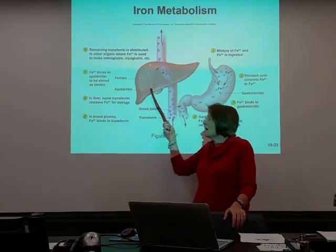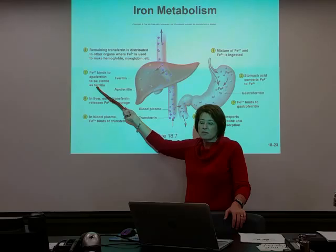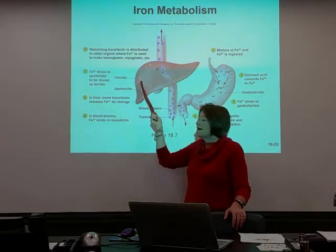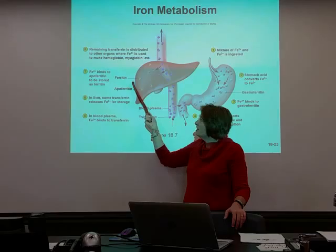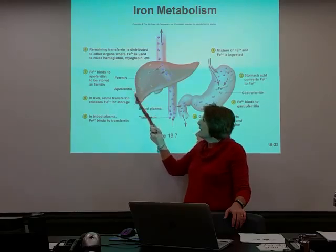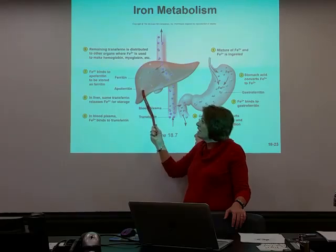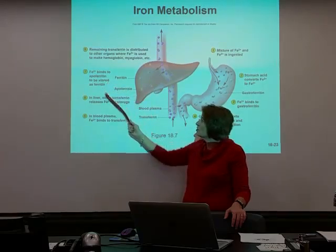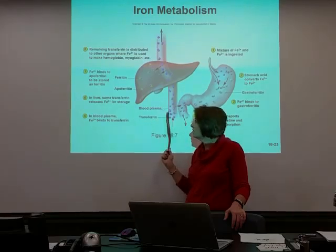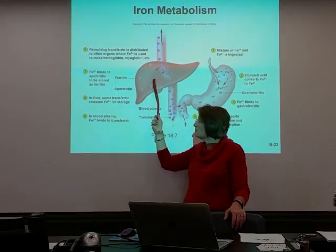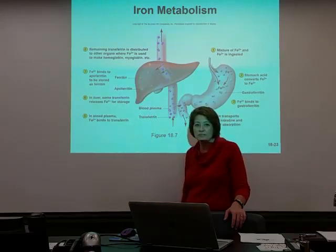We can store the iron in the liver, but to store it, we need another protein. The protein that attaches to the iron in the liver is apoferritin. When the iron binds to apoferritin and gets stored, it becomes ferritin. So transferrin brought it in and dropped it off, and we get it attached and stored in the liver.